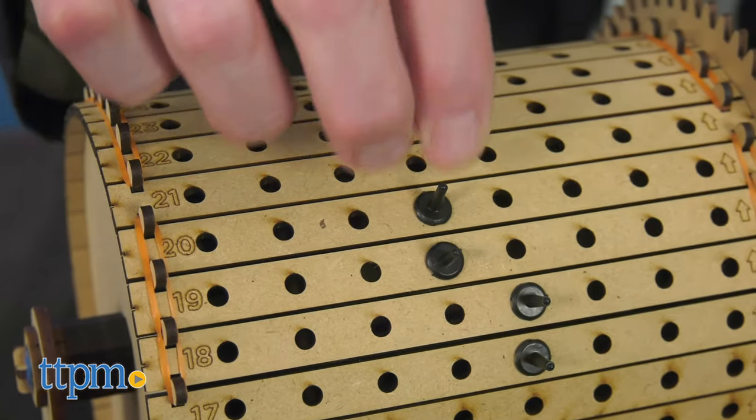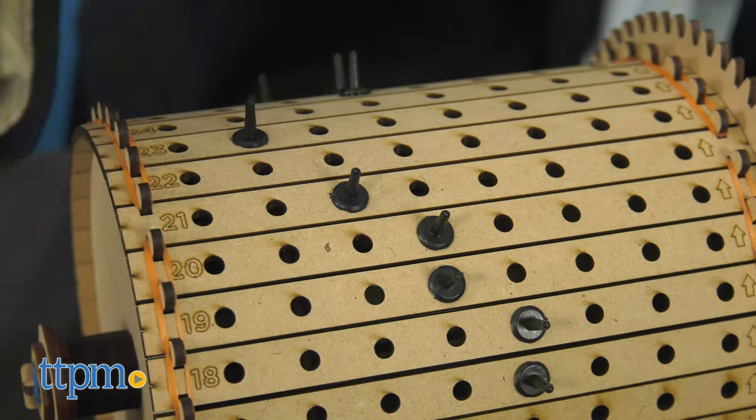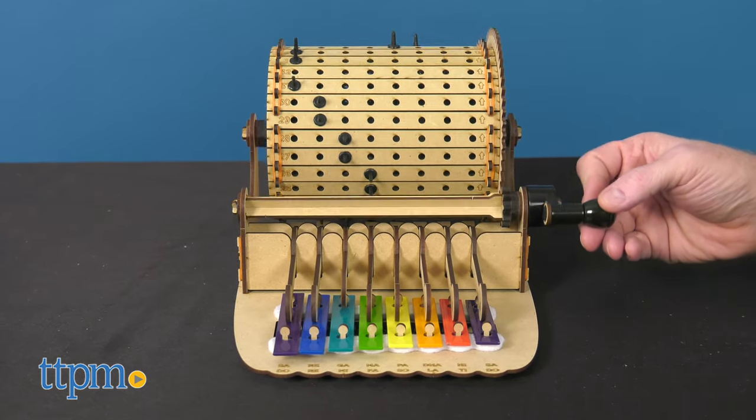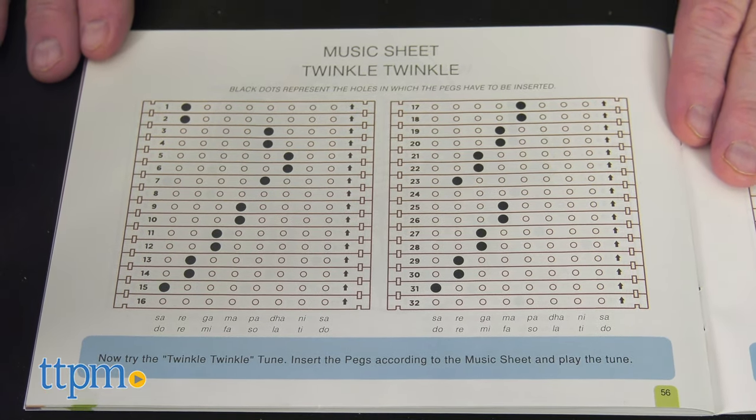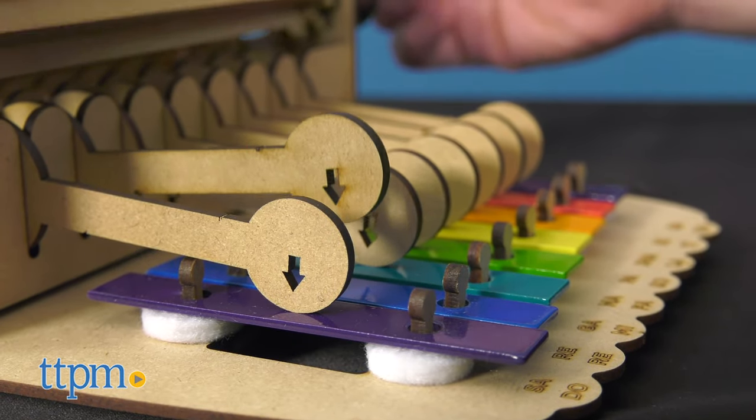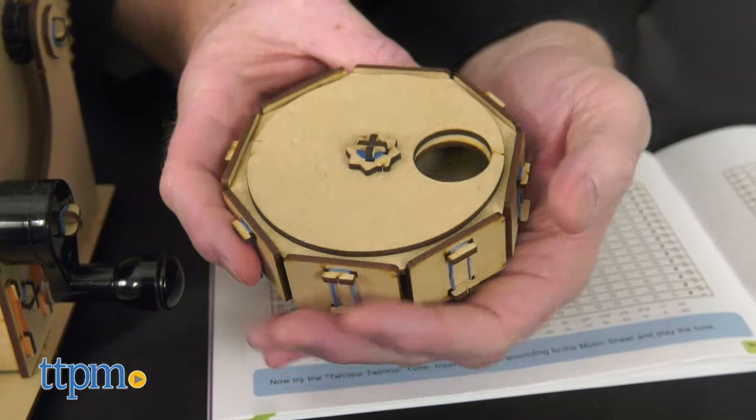To make music, place plastic pegs in the wooden barrel and then turn the handle allowing the pegs to tap on the plates making them vibrate with sound. Kids can make the XyloFun play specific musical pieces included in the manual or create their own compositions. The kit also has a special compartment for extra pegs that kids build as well.